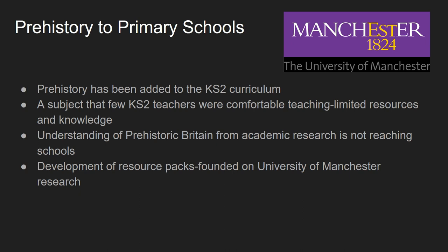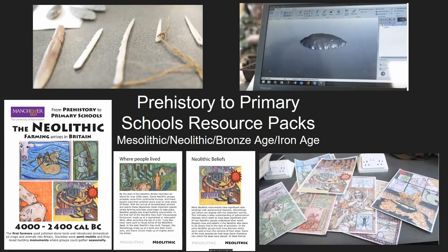How many schools are in Greater Manchester — 500, 600? It's beyond our capabilities. So what we did was produce resource packs which have short written guides. Each guide breaks down the four key prehistoric periods — the Mesolithic, the Neolithic, the Bronze Age, and the Iron Age — into simple themes.